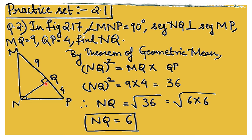This is a clear-cut application of the geometric mean theorem. NQ² equals the product of MQ and QP. So NQ² = 9 × 4 = 36, and NQ = √36 = 6. So NQ is 6. A very simple application — the same type of question we discussed in the solved examples.